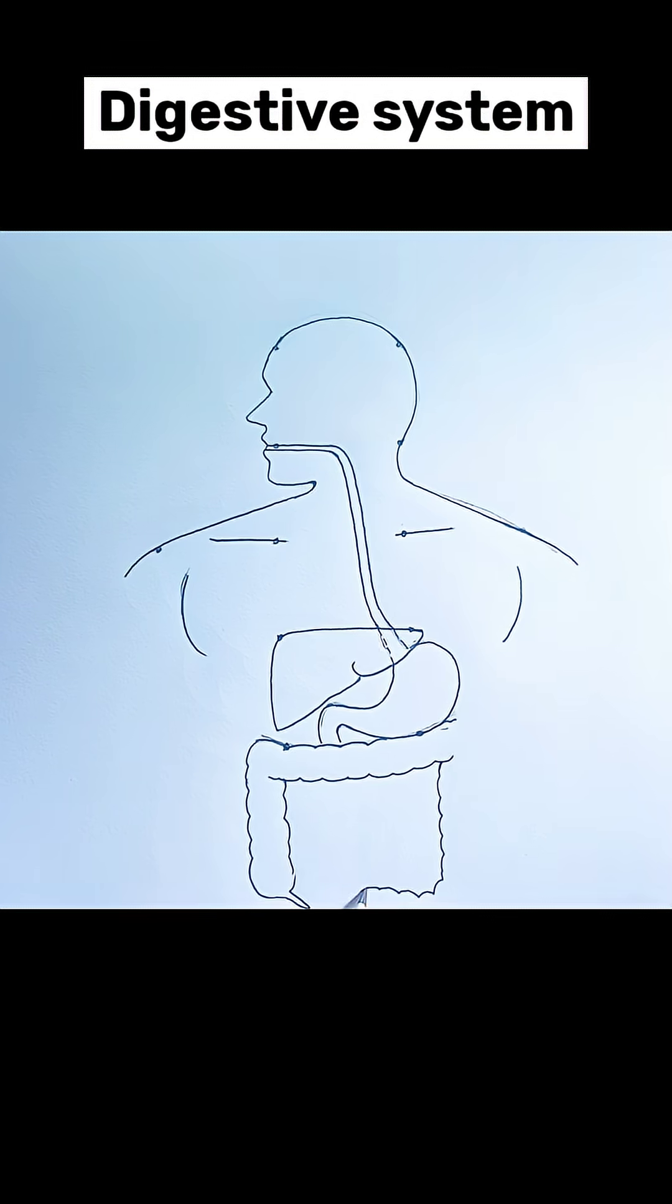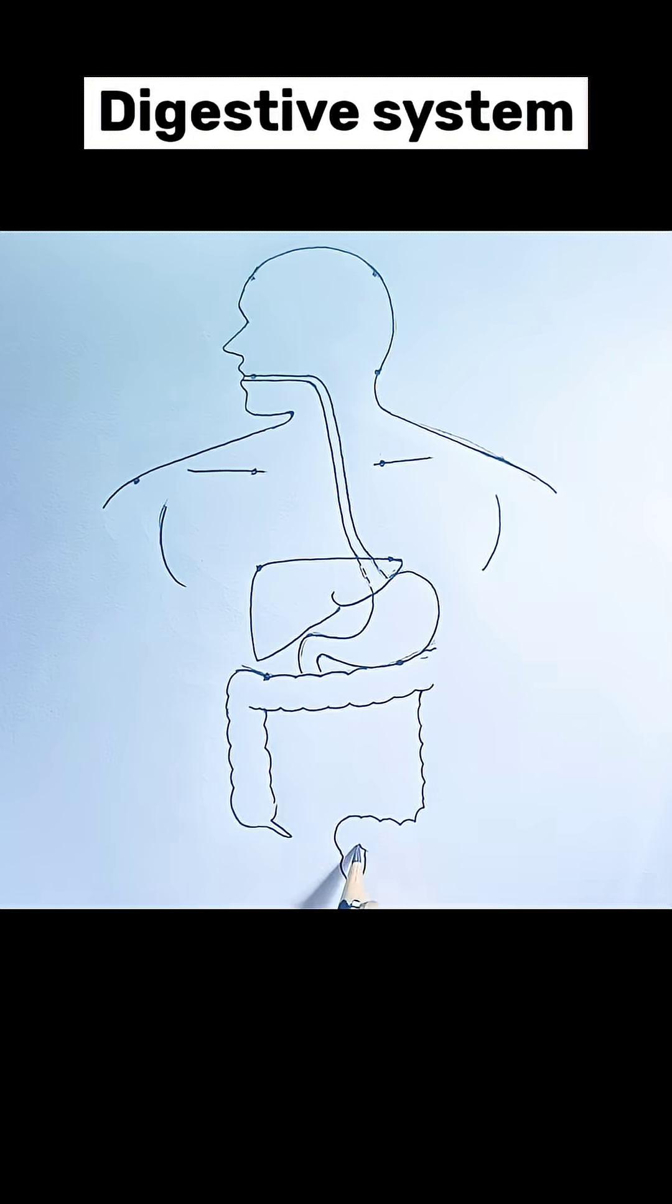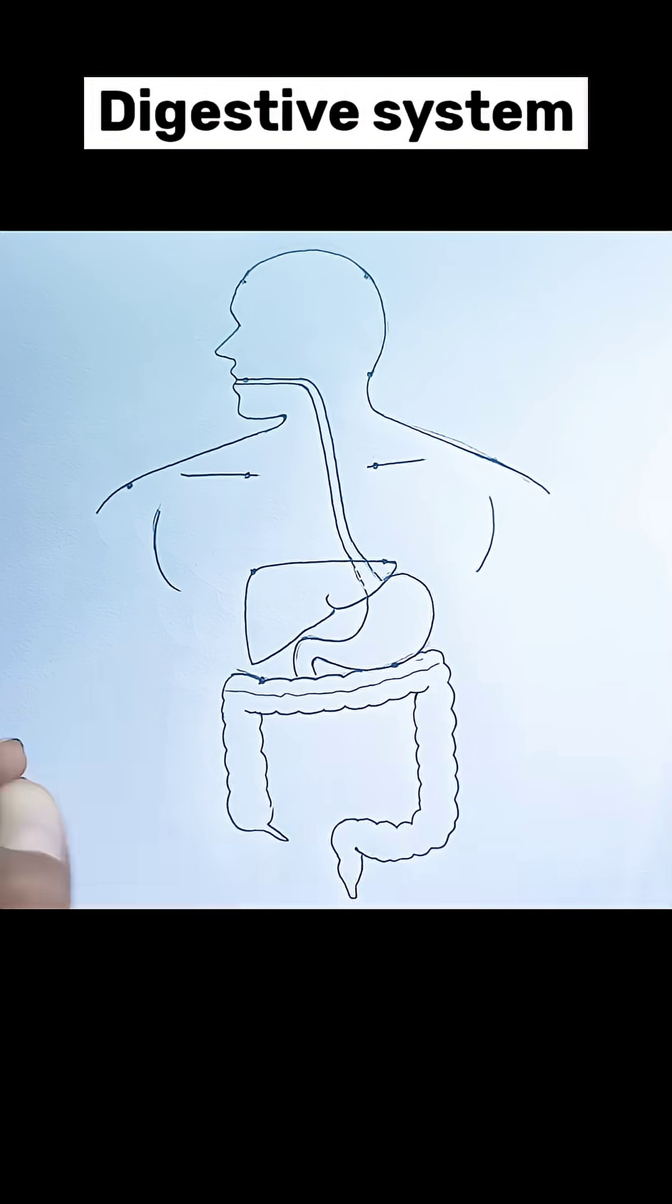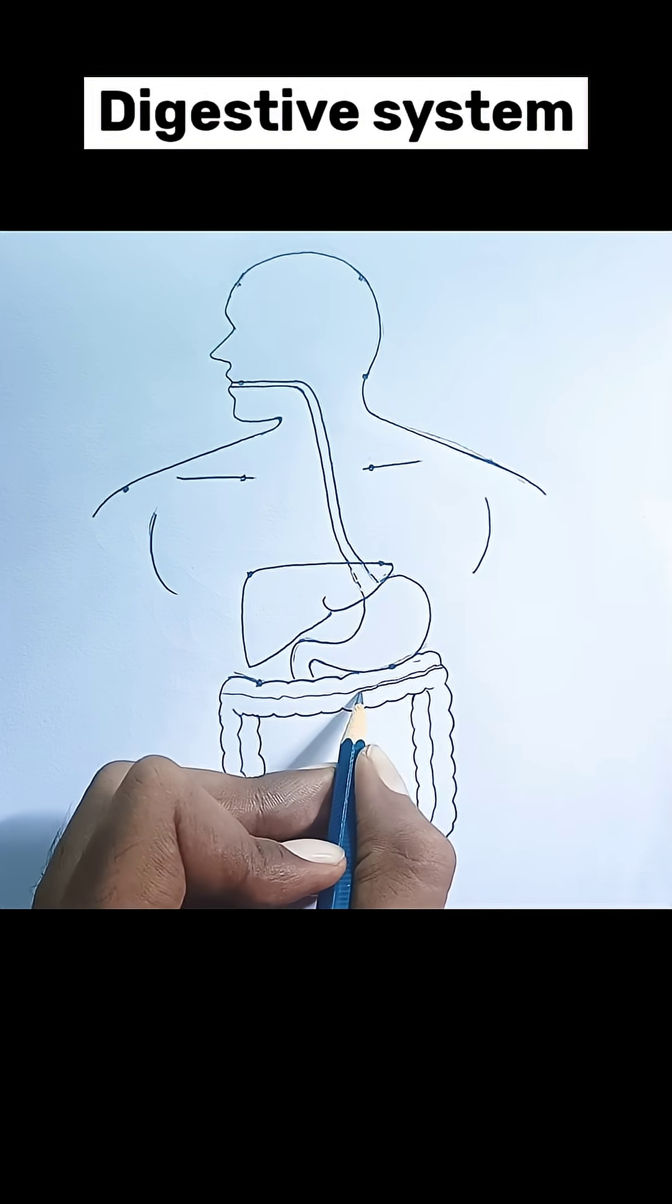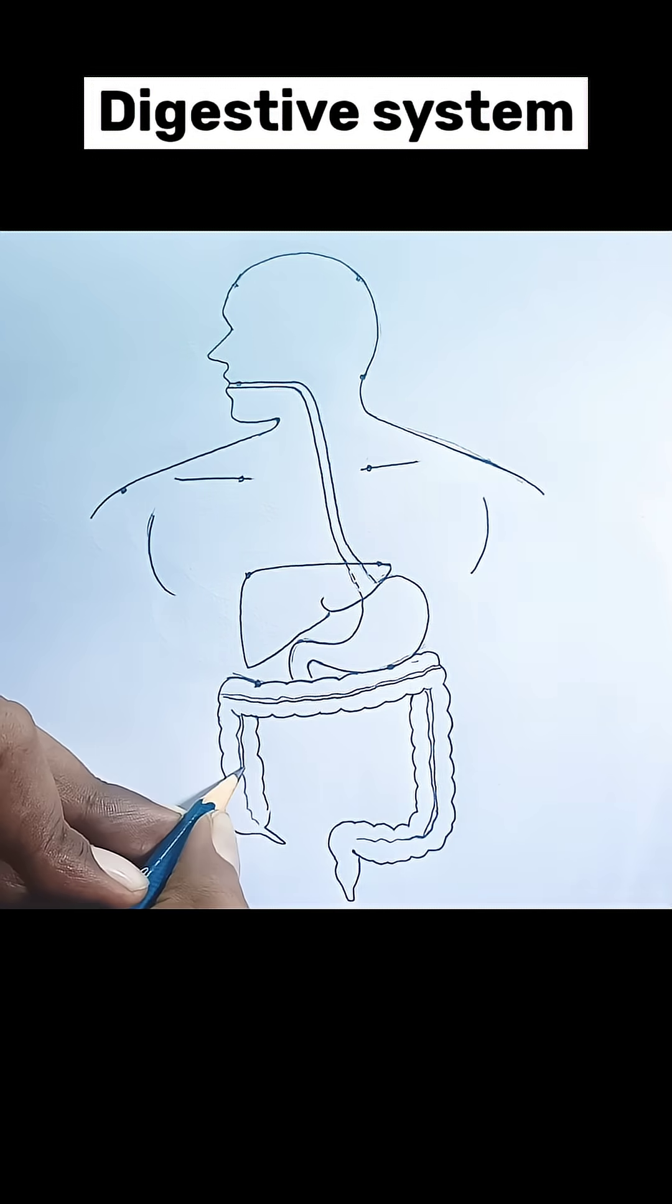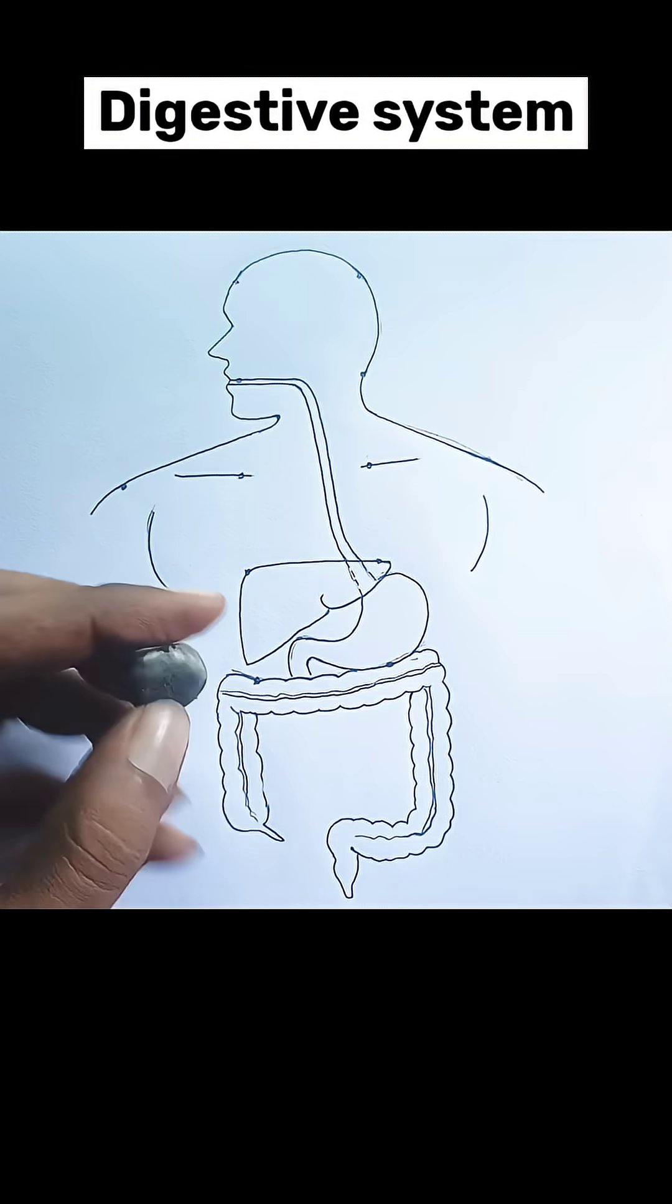Large intestine: a wider tube that follows the small intestine. Its primary functions are to absorb water and electrolytes from indigestible food matter and to form feces. It includes: